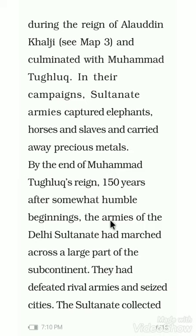During the reign of Alauddin Khalji — and culminating with Muhammad Tughlaq — campaigns were made toward the southern part. Alauddin Khalji was the first ruler who campaigned in the south; before him no ruler had done so. When they campaigned southward they captured elephants, horses, slaves and precious metals, but Alauddin left the conquered kingdoms under their own rulers as subordinates.